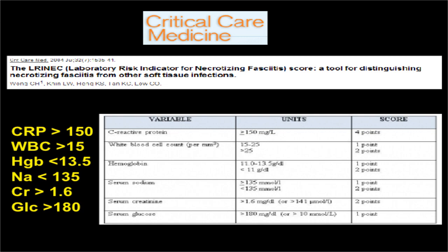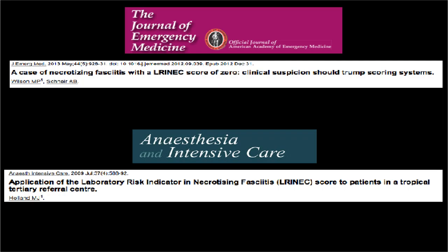In regards to lab work, sometimes you'll hear talk about a LRINEC score — a score developed to try and distinguish necrotizing infection from other infections that utilizes white blood cell count, sodium, and other lab findings — but this is not generally thought of as very sensitive, and you're going to miss a lot of patients if you rely on this for your diagnosis. As shown in a case report where a patient had a LRINEC score of zero and actually had necrotizing fasciitis, other reviews have also found a fair number of patients presenting with a score lower than the cutoff suggested by the original authors.